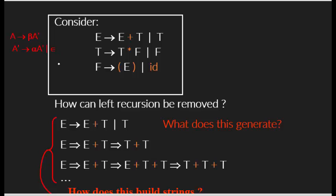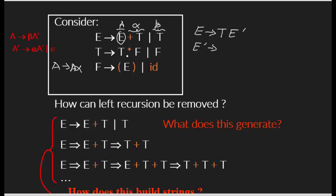A goes to A alpha — so here A is E, alpha is plus T, and beta is T. Applying the transformation: E goes to T E-prime, and E-prime goes to plus T E-prime or epsilon. That is all you have to do.